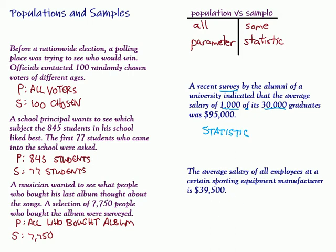How about this one? The average salary of all employees at a certain sporting equipment manufacturer is $39,500. Look again for some of those words: survey, sum, sample, all. Hey, look at that. All. So, because this is coming from all of the employees, this is the population that we're dealing with, and so this number right here would be a parameter.